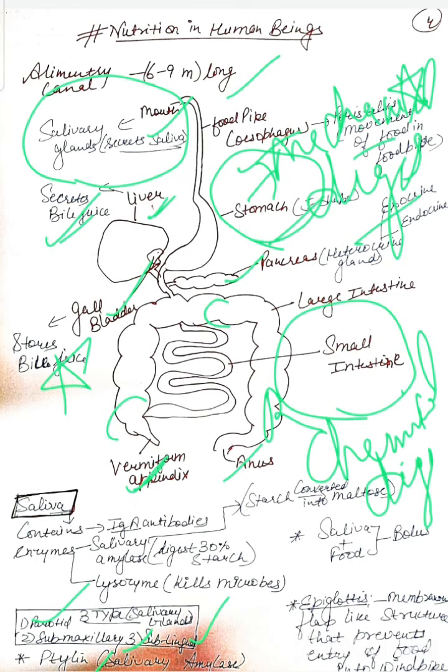Salivary amylase is the most important enzyme present in saliva, also known as ptyalin. Also in saliva are IgA antibodies, secretory antibodies. Salivary amylase helps in 30% of starch digestion. Lysozyme kills harmful microbes.